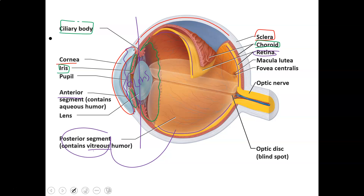You do not make more vitreous humor — you're born with all you'll ever have. If you sustain damage and it leaks out, you can't repair that, and you'd likely lose vision in that eye. It's a very important fluid to protect.